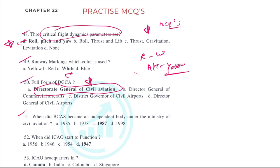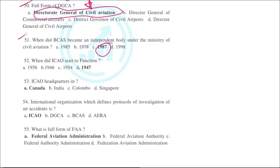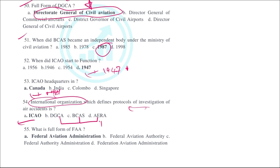BCAS became an independent body in 1987. ICAO started to function in 1947, with its headquarters in Montreal, Canada. The international organization which defines protocols for investigation of air accidents is ICAO. DGCA, BCAS, and AAI are Indian organizations, whereas ICAO is the international one.